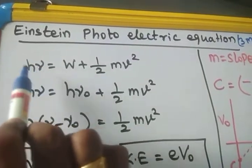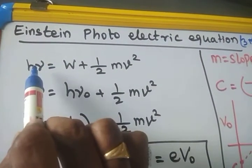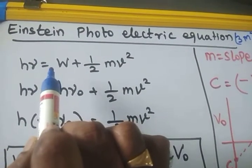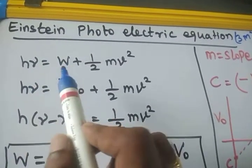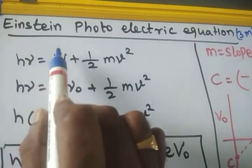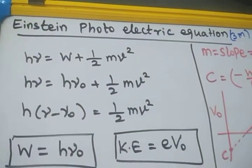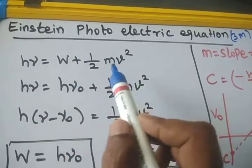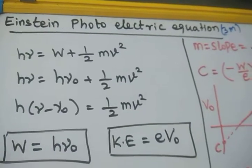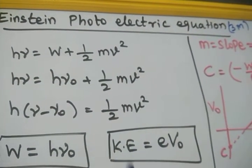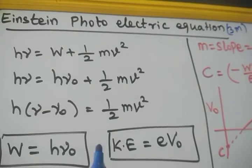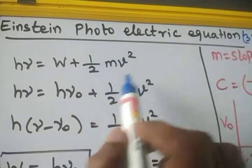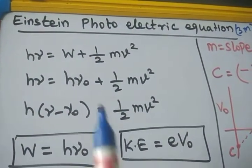H-nu is the incident light radiation energy. When high-energetic incident light radiation falls on a photosensitive material, a small amount of energy is spent to remove the electron from the metal surface. That minimum energy required to remove the electron from the metal surface is called the work function. The remaining part of the incident radiation is taken by the electron as kinetic energy for the motion of the free electron through the wire. That flow of photoelectrons through the wire is called photocurrent.